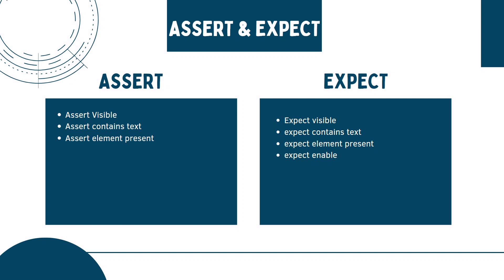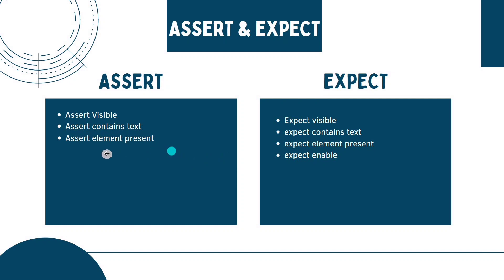Expect tells you what value should be present at that place. Assert has properties like assert visible, assert contain text, and assert element present. Expect has expect visible, expect contain text, expect element present, and also expect enable. Note that assert disable is a property but assert enable is not, so for enable and disable buttons we have to use expect only.